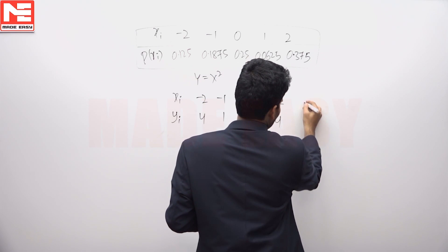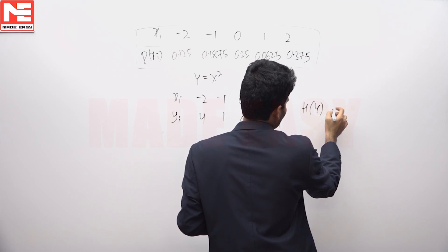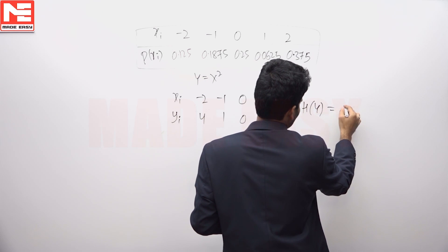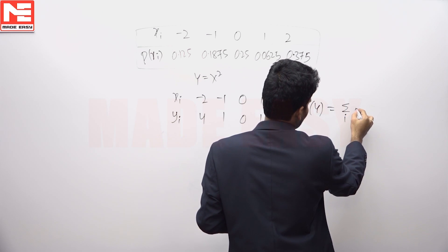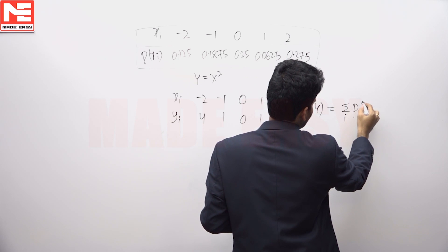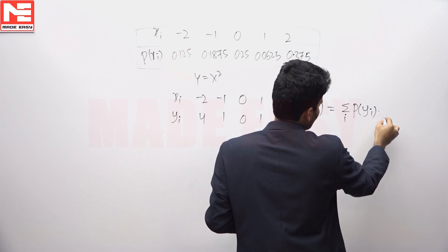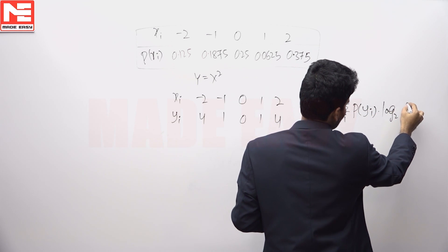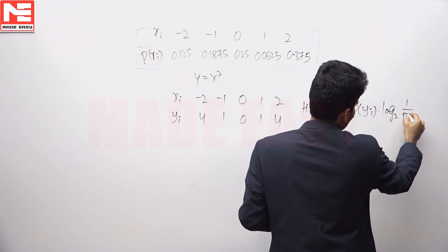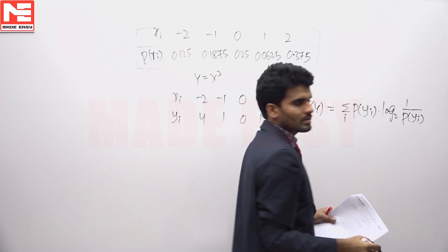The entropy of y equals the summation over i of P(y) times log base 2 of 1 divided by P(y).